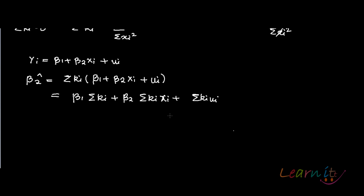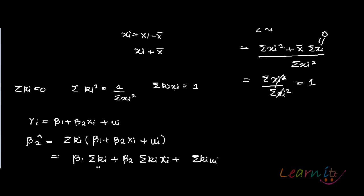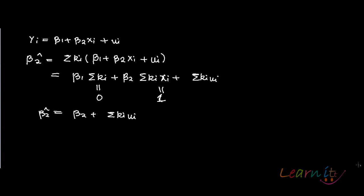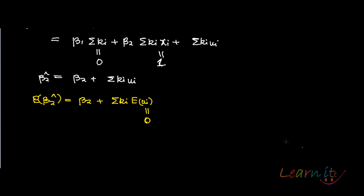We know summation kᵢ = 0 and summation kᵢXᵢ = 1, so what is left is β₂̂ = β₂ + summation kᵢuᵢ. Taking expectations, E(β₂̂) = β₂ + summation kᵢ · E(uᵢ). Since kᵢ is non-stochastic it comes out of the expectation, and E(uᵢ) = 0 by the assumption of the classical linear regression model. Therefore E(β₂̂) = β₂.